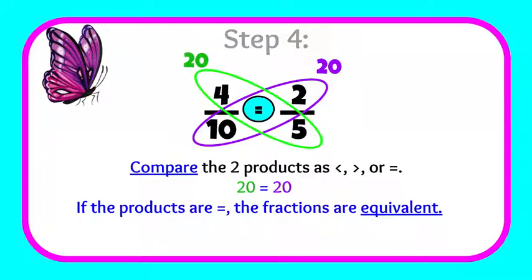So we're going to compare the two products now as greater than, less than, or equal to. And because 20 equals 20, these fractions are equivalent. Equivalent is the same as saying that they're equal to each other.